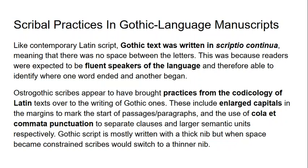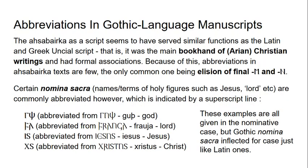Gothic script is mostly written with a thick nib, but scribes could switch to a thinner nib when space was constrained. Abbreviations are quite few in Achseberka texts because the script served similar formal functions as Latin and Greek uncial scripts — it was the main book script of Arian Christian writings. The only common abbreviation is the elision of final m and n, which Latin manuscripts also did, interestingly reflecting how spoken Vulgar Latin of the time was also losing final m.